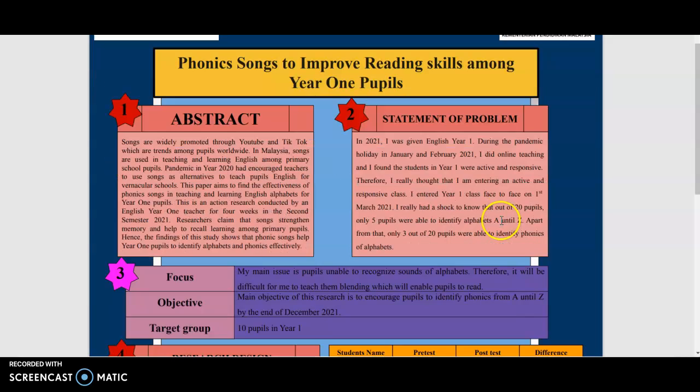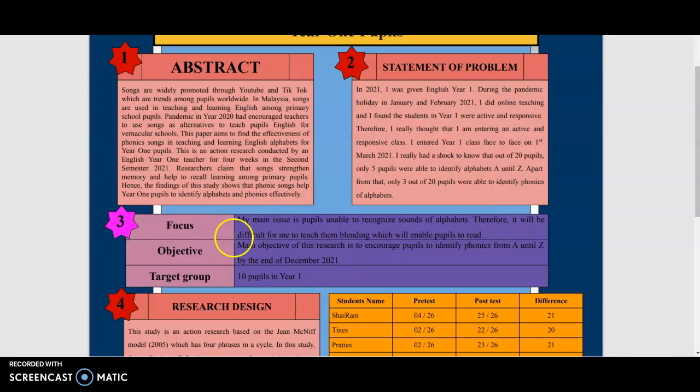My main objective of this paper is to encourage the pupils to identify phonics from A until Z by end of December 2021. This is because phonics is one of the basic skills that the pupils have to acquire so they can improve their reading skills. My target group was 10 pupils in Year 1.